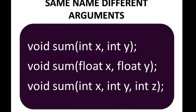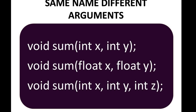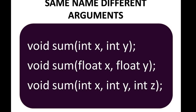Here in this example, we can see three prototype declarations with the same name 'sum', but the number of arguments and the type of arguments are different. In the first declaration, sum uses two integer variables; the second uses two float data types, so the first and second differ in their data types. The third function has three integer variables, differing from the first in the number of arguments. The main consideration for function overloading is that either the number of arguments or the data type of the arguments must be different.